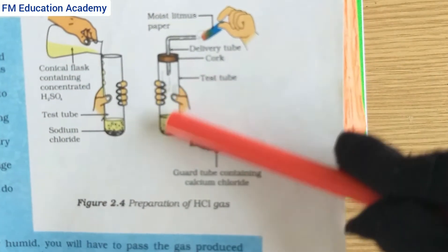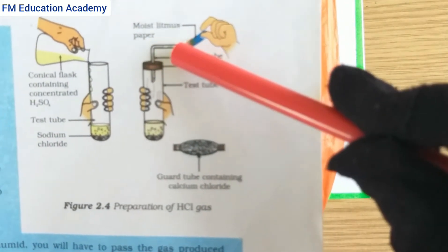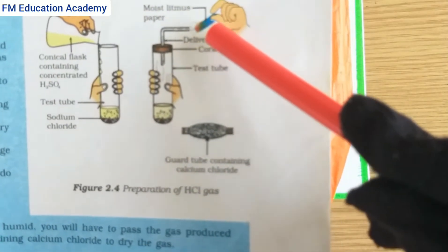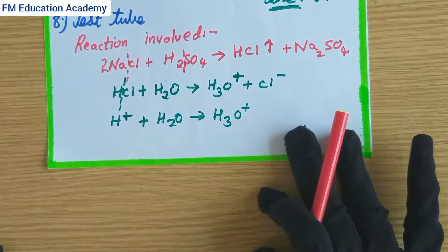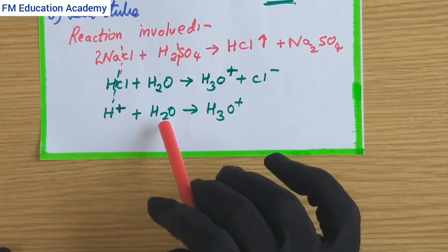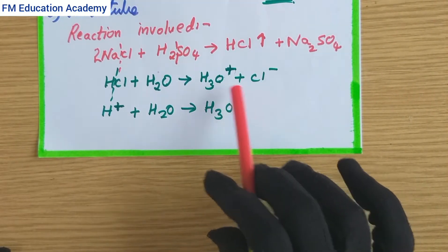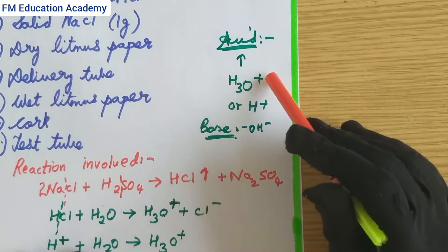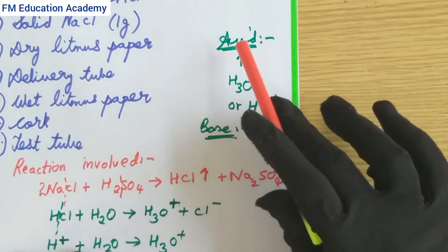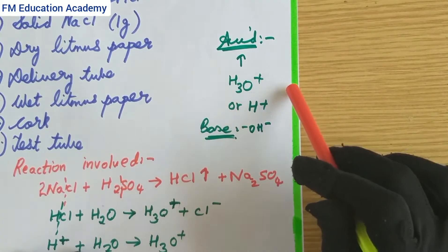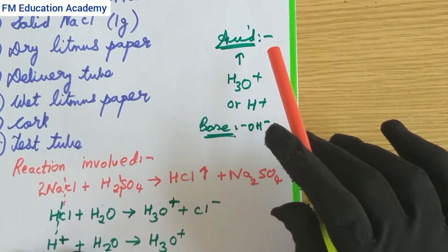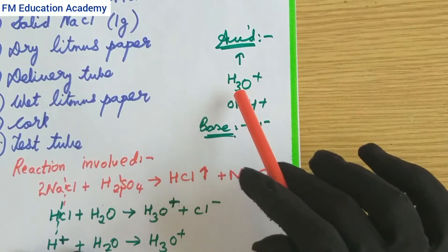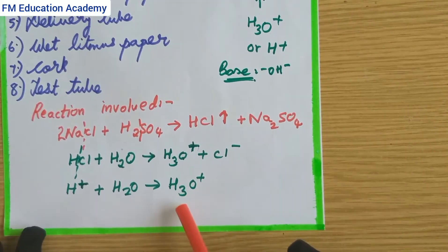When sodium chloride and sulfuric acid react, they release hydrochloric acid, which passes from the test tube and reacts with the wet litmus paper, producing H3O+ ions and Cl- ions. We can also say that H+ ions combine with water to form H3O+ ions. H3O+ or H+ ions are the ions present in acids, and they are released only when exposed to a moist or wet environment.